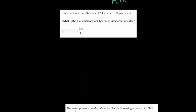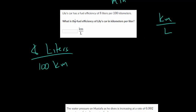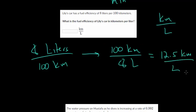Let's try another problem. Lily's car has a fuel efficiency of 8 liters per 100 kilometers. We want to know, what is the fuel efficiency of Lily's car in kilometers per liter? We want kilometers per liter, but what we're given is 8 liters per 100 kilometers. To figure out kilometers per liter, notice we're essentially just flipping this. We don't actually have to change any of the units. We can just take 100 kilometers and divide it by 8 liters. 8 goes into 100, 12.5 times. So it's 12.5 kilometers for every liter.